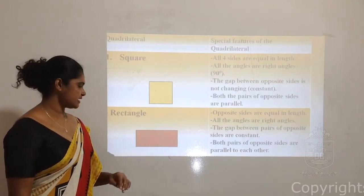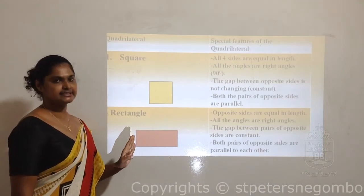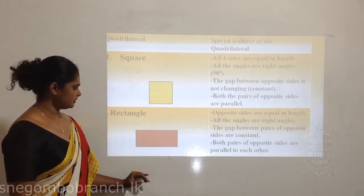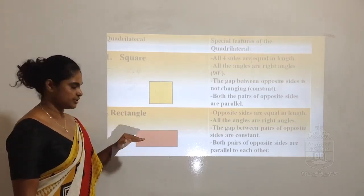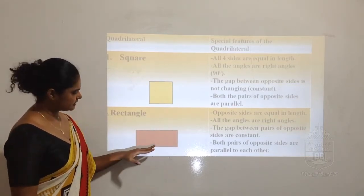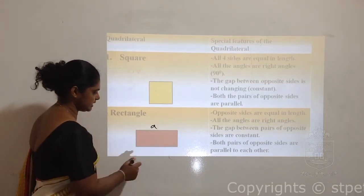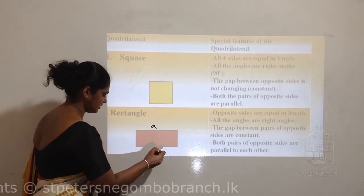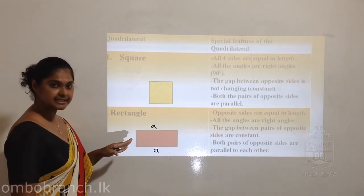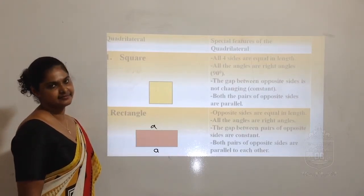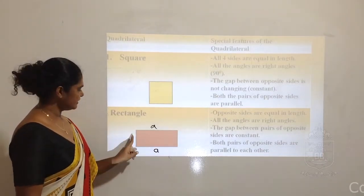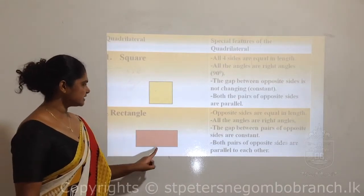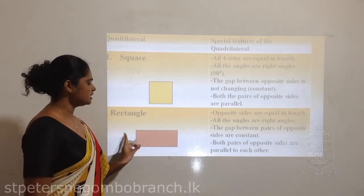Moving on to rectangle. The rectangle is also a rectilinear plane figure and a quadrilateral because it is made with four sides. It also has four sides, but when you measure the lengths - if I name them A and B, the length of A and length of B is similar, meaning opposite sides are equal in length. These two are equal and the other two are equal.